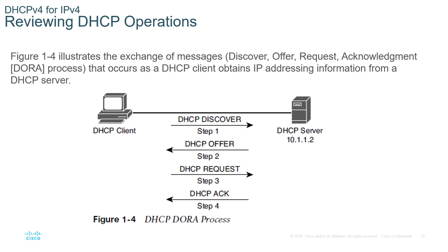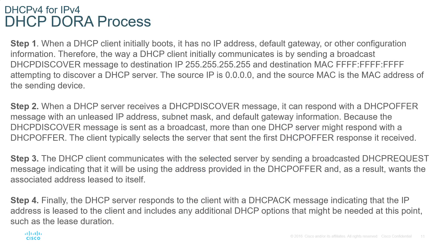When the client boots up it sends out a DHCP Discover message, and all the local DHCP servers will respond with an offer. The client will then select which one it wishes to make a request of — in other words, it's requesting to use the parameters within a particular offer. The server then acknowledges whether that IP address is still available for use by that client. Generally speaking, the first offer the client receives will be the one it requests.